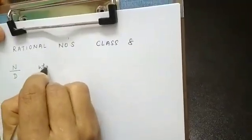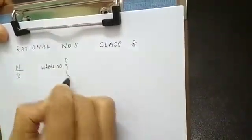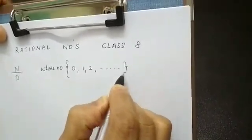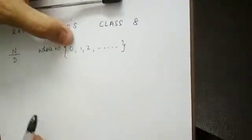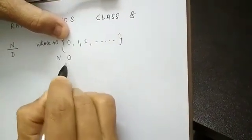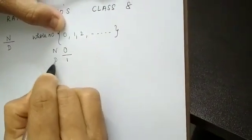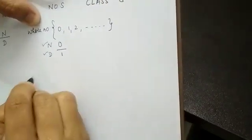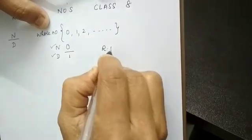Let us consider whole numbers. What are whole numbers? Numbers starting from 0, 1, 2, and so on. In this case, 0 is in the numerator's place and 1 is in the denominator's place. So it has a numerator and a denominator. So whole numbers are rational numbers.